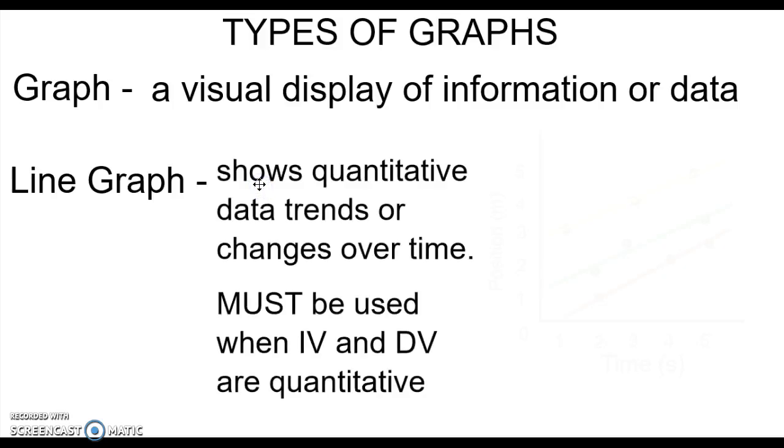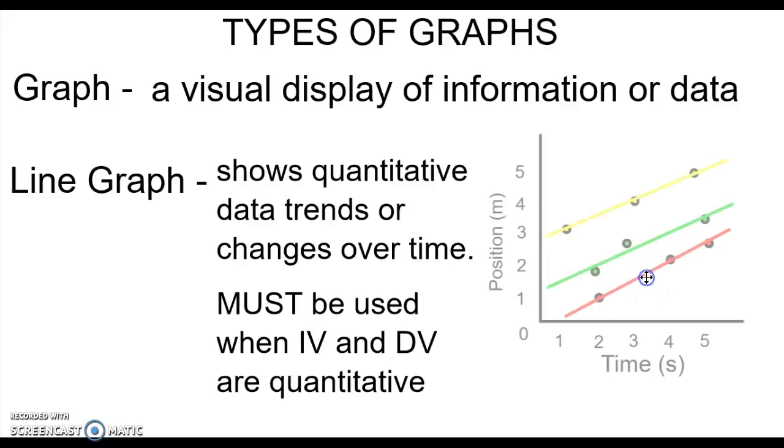A line graph is used for showing quantitative data trends or changes over time. When you have an IV and a DV that are both quantitative, both sets of numbers, you have to use a line graph.